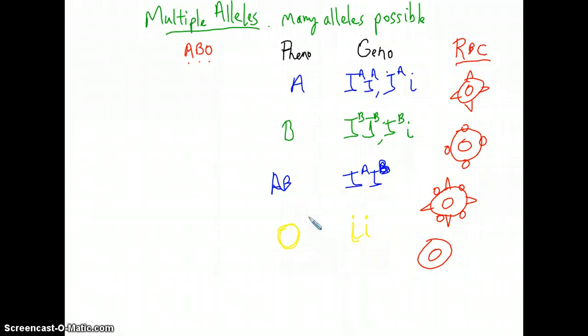a woman that has type A blood. So if we have a woman with type A blood. A woman with type A blood. And a man with type B blood. Would it be possible for them to have a child with type O blood? That's the question.